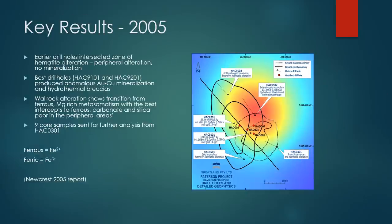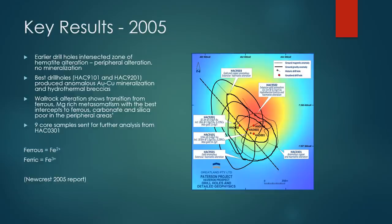Zooming in on a diagram from a 2005 report, we have some drill holes on the edge marking the boundary to the deposit, and all the holes in the centre are attempting to drill the core of the deposit. Within the 2005 report, they mention that the best drill holes produced anomalous copper and gold mineralisation, mainly within veins and within hydrothermal breccia — and we know that the breccia is a big thing at the Haveron District now. They also commented on alteration: the best drill holes were in contact with ferrous and magnesium-rich metasomatism. Ferrous iron is Fe²⁺; ferric iron is Fe³⁺, which is where we get the hematite. Magnesium-rich and ferrous metasomatism is typically where we get more silica and more carbonate.